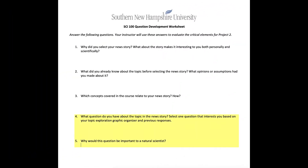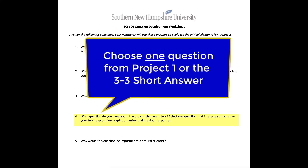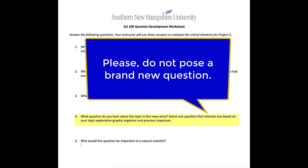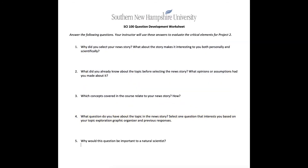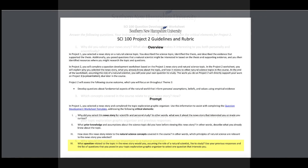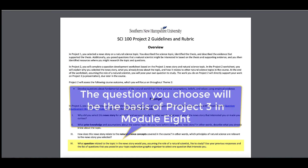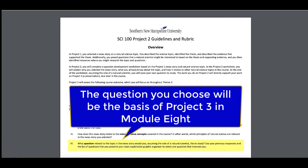In questions 4 and 5, we will wrap up our QDW by selecting the one question we think a natural scientist would want to know about our science topic. This will be the one question we want to move forward with for the remainder of the course. The question you submit for question 4 in this QDW must be one you have previously posed in either Project 1 or the 3-3 short answer, or it must be closely related. At this point, we cannot ask a brand new question regarding a new aspect of your topic that was not previously mentioned. This is one of your keys to success, because the question you submit for question 4 will be used as the basis for your final presentation in Module 8.